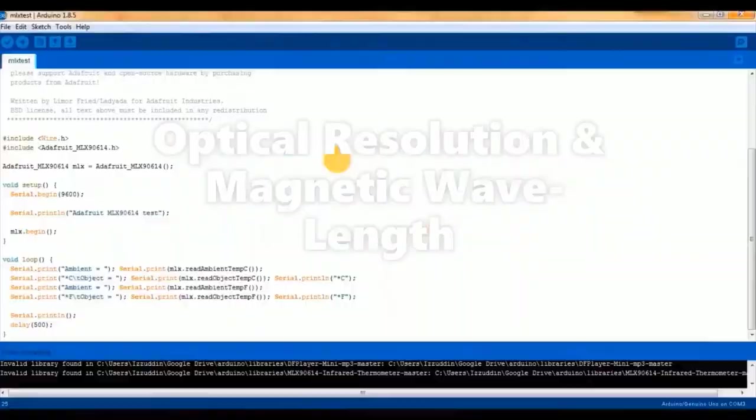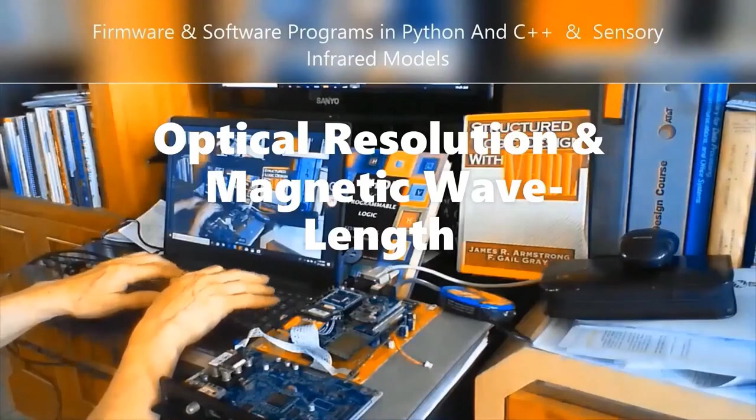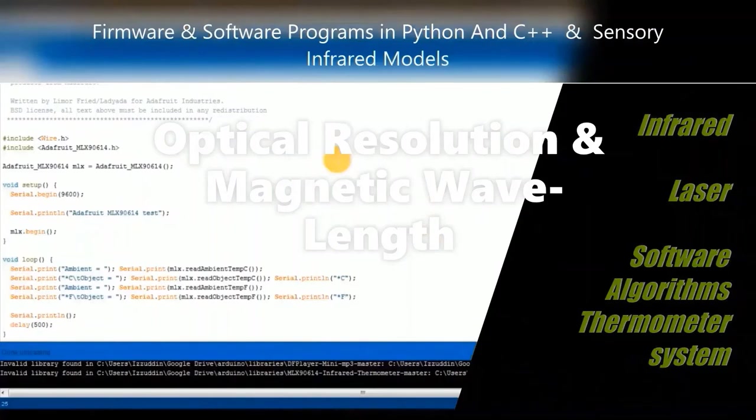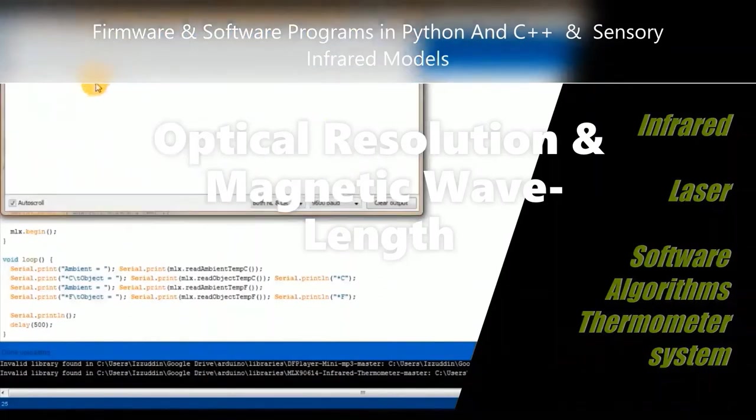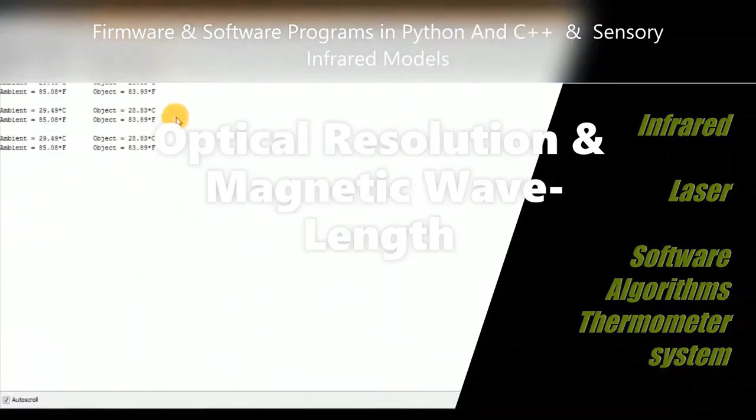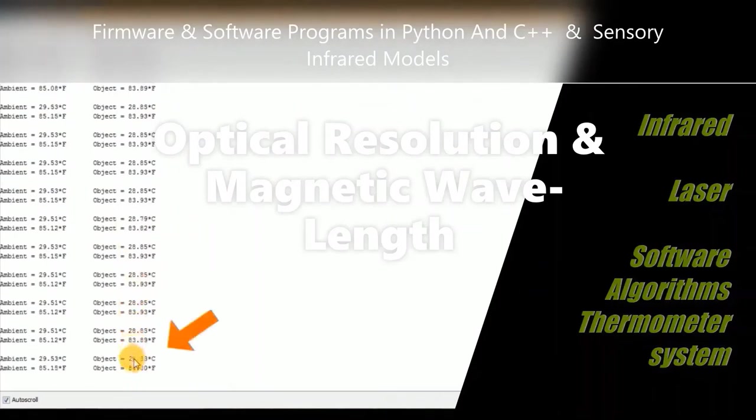Infrared is an electromagnetic wave with a wavelength between microwave and visible light, specifically between 1 mm and 760 nm, which is longer than red visible light. Therefore, anything above absolute zero—minus 273.15 degrees Celsius—can generate infrared rays.